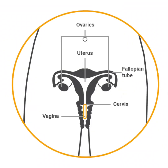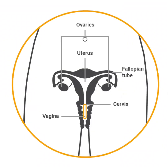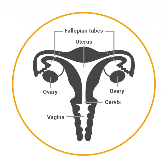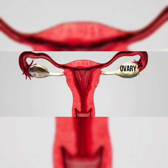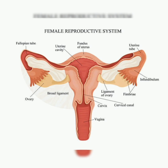The internal part of the female reproductive system consists of the vagina, cervix, uterus, ovaries, and fallopian tubes. The vagina is a muscular canal connecting the cervix to the outside, capable of widening for childbirth and lined with a moist mucous membrane. The cervix is the lowest part of the uterus; it has a hole in the middle that allows sperm to enter.